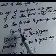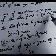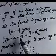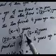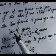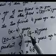Now, the ages of the two friends 4 years ago: the friend whose age today is x years had age x minus 4 years four years ago. Similarly, the friend whose age today is 20 minus x had age 20 minus x minus 4, which simplifies to 16 minus x years four years ago.